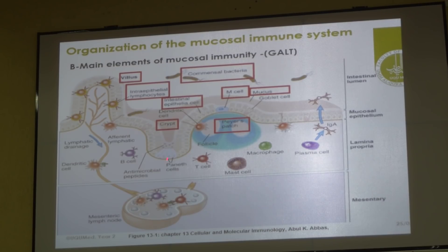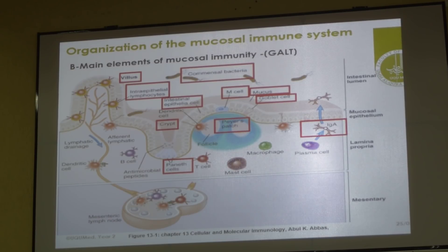Then the crypts — here you have Paneth cells which are mainly known for producing antimicrobial agents. And goblet cells produce mucus. IgA antibodies in the GI tract are all dimeric — there are two molecules joined together by a J chain, a joining chain. So two molecules of IgA are there, and it is produced here in the lamina propria and then secreted into the lumen.